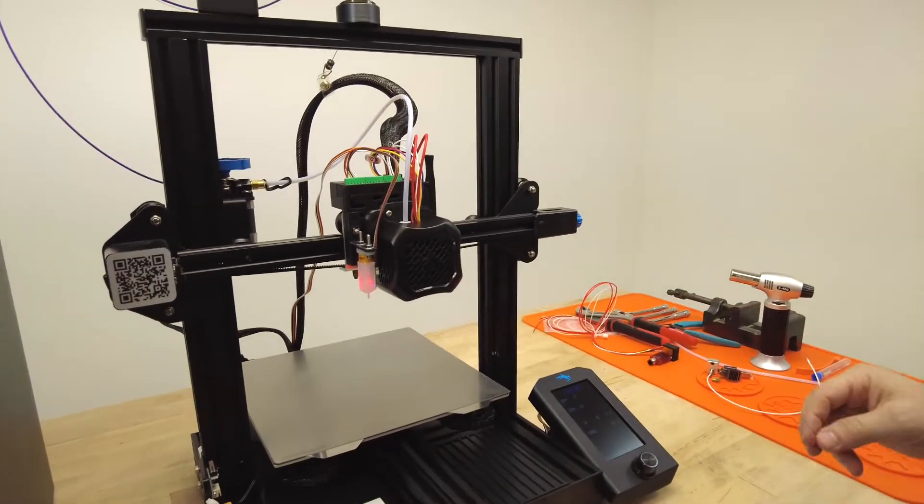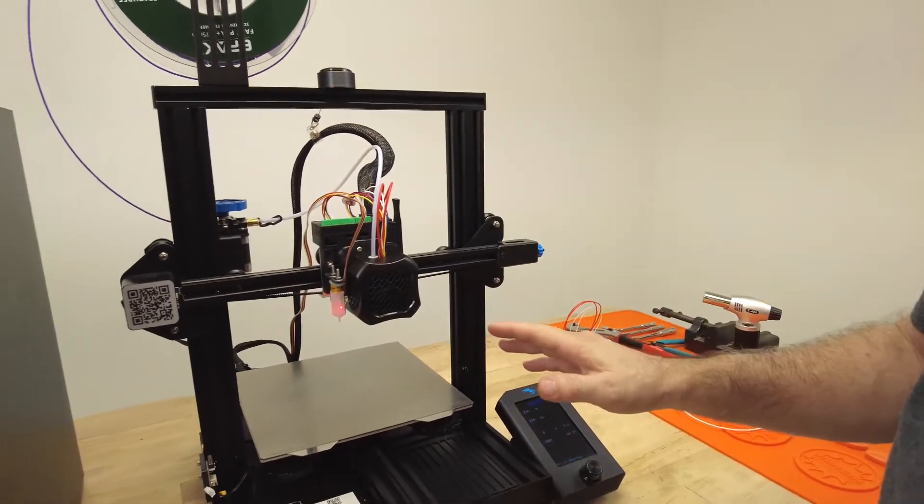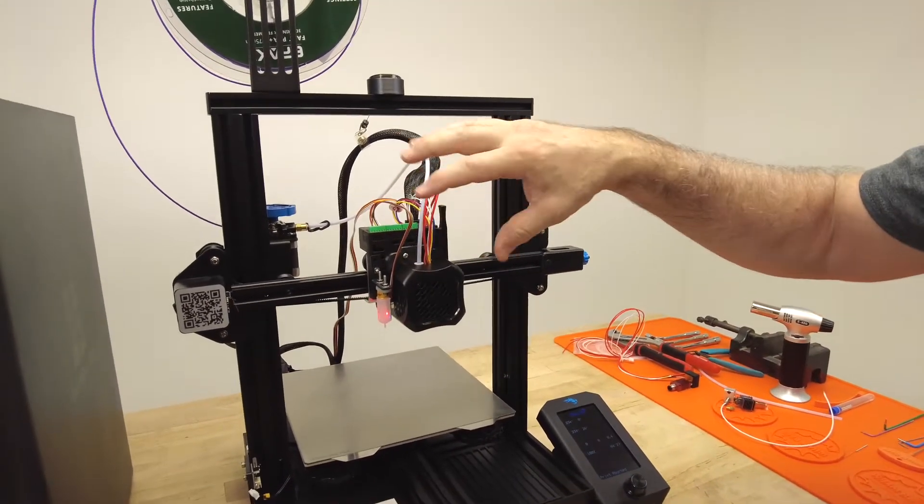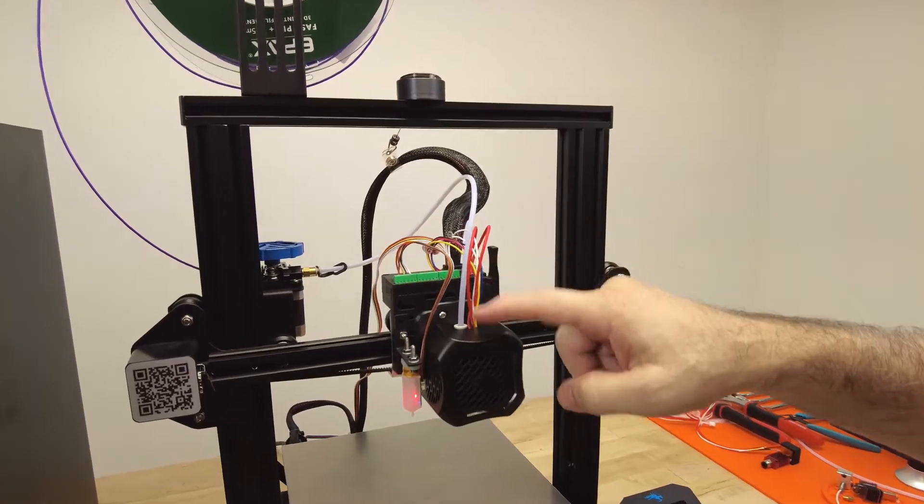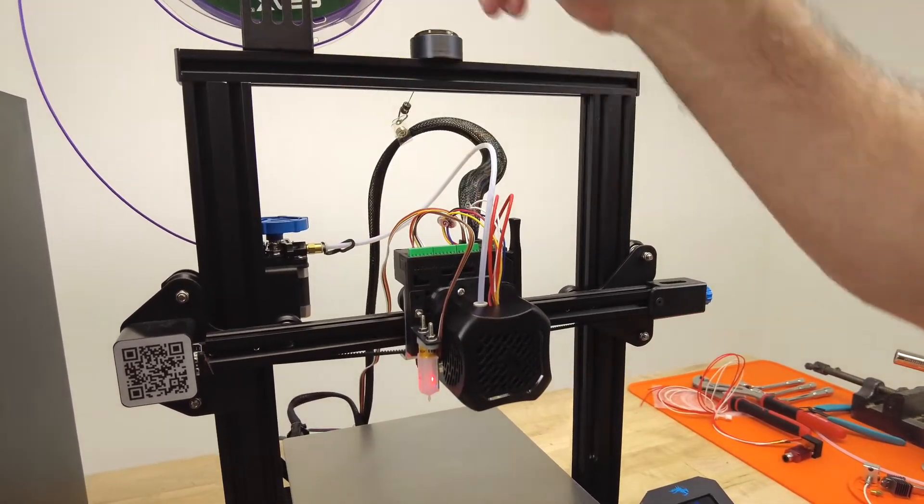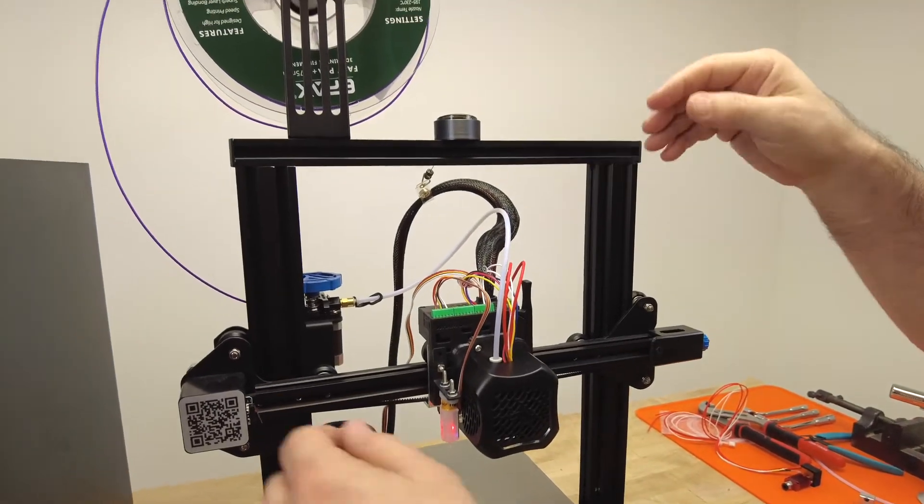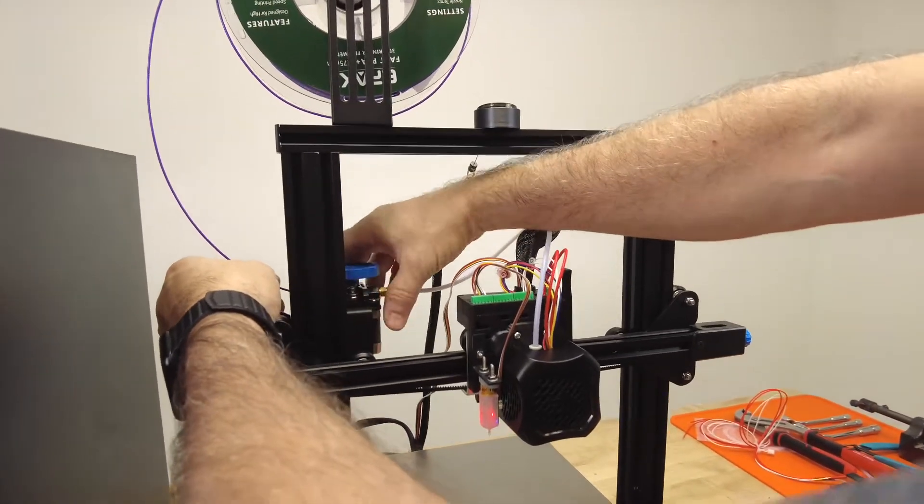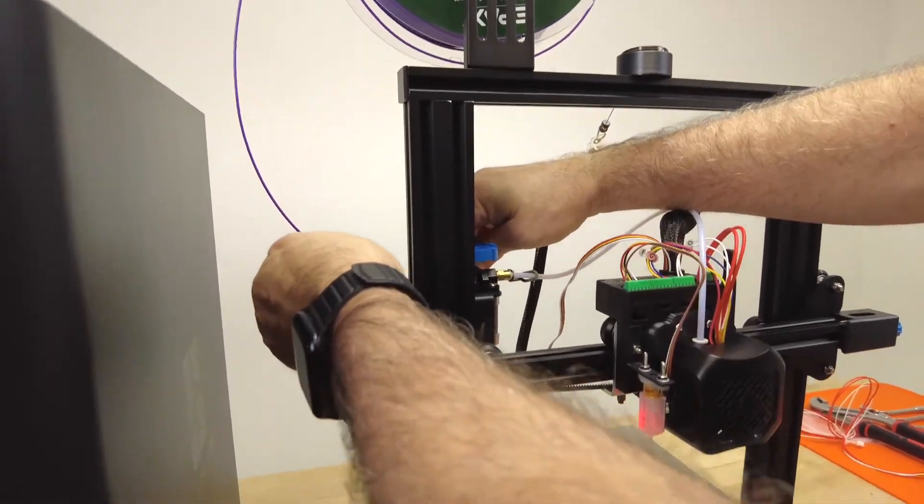But let's look at the situation where maybe you have the clog somewhere else. So we're going to have to try with it on the machine. I need to take the Bowden tube out of here. If I can, I retract my filament, but if my filament's jammed, I might not be able to do that.